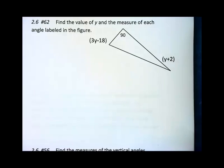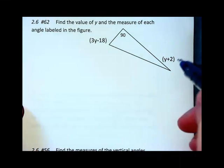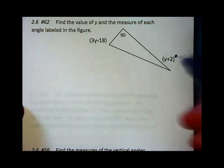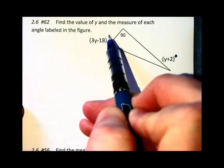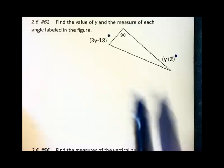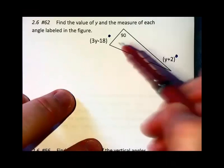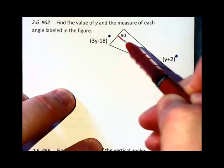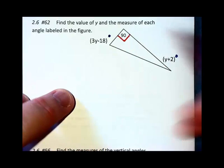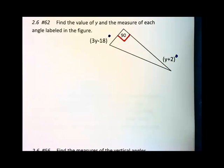The next problem, find the value of y. I probably should have a little degree symbol up there, y plus 2 degrees and 3y minus 18 degrees. Also, sometimes in word problems, when you have a 90 degree angle, we put a little square in the corner to designate the right angle.